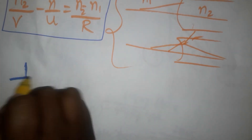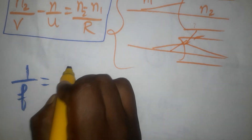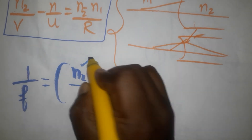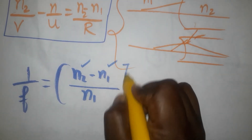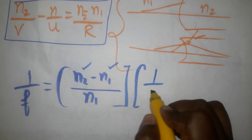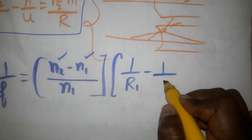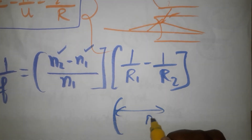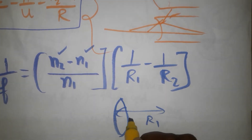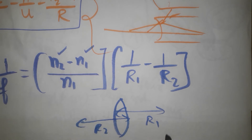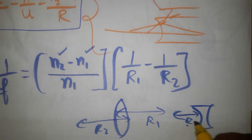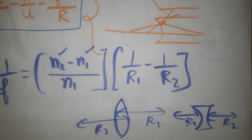Next is the lens maker's formula: 1/f = ((n2 − n1)/n1) × (1/R1 − 1/R2), where n2 is the refractive index of the second medium, n1 is the first medium, R1 is the radius of curvature of the first surface, and R2 is the second surface. This applies to both convex and concave lenses.